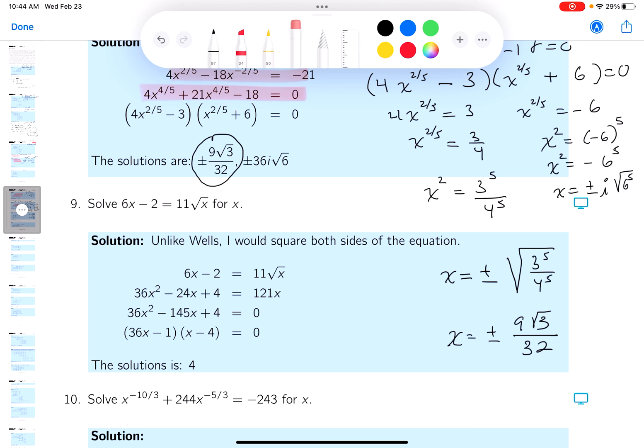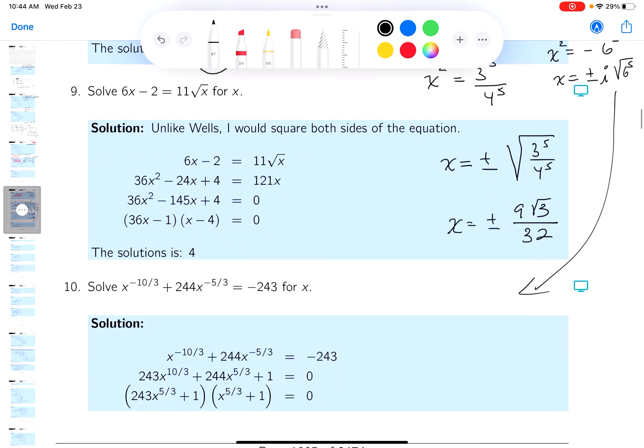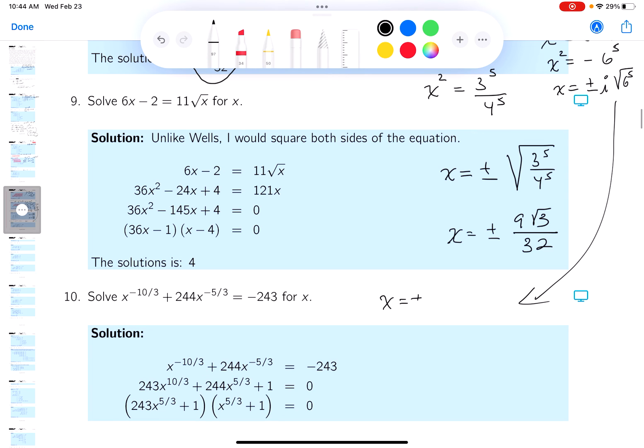x equals plus or minus i. You know what? I'm kind of jamming that in there. I'm just going to write it over, and I'll put it over here. Let me go get my little, whoops. I'm going to write this as x equals plus or minus i. And then I'm going to say square root of 6, 4, square root of 6.